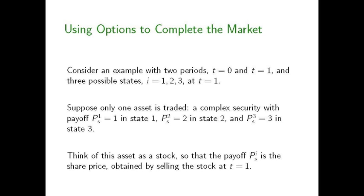In particular, let PS1 — the payoff of this complex security in state one — be equal to one dollar; PS2 equals two dollars in state two; and PS3 equals three dollars in state three. We can think of this complex asset as being like a stock. State one is the worst state, where the stock sells for a low price of one dollar per share a year from now. State two is the in-between state, where the share price is two. And state three is the really good state, where the price of the stock is equal to three one year from now.